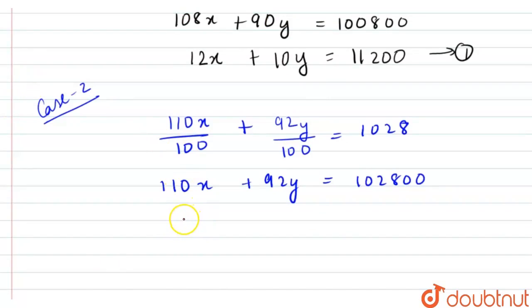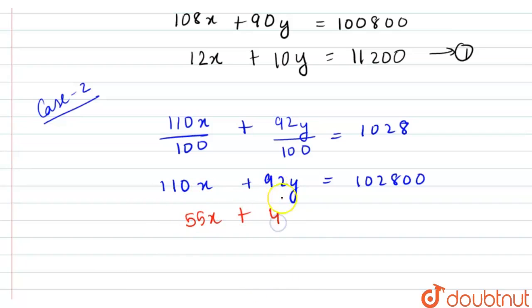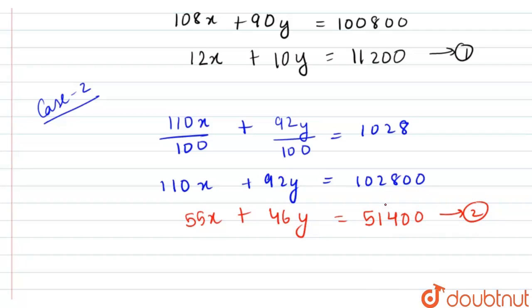Dividing both sides by 2, we get 55x + 46y = 51400. This is equation number 2.